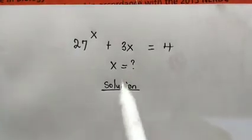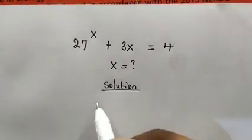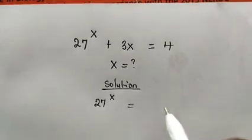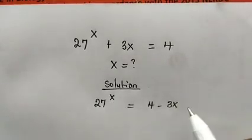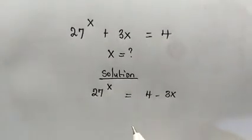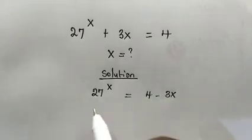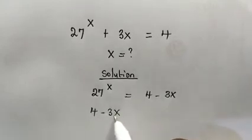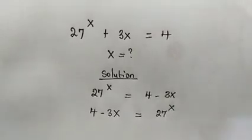From the left hand side, we can subtract 3x from both sides. So we have 27 raised to the power of x will be equal to 4 minus 3x. Now let us change the sides, so this will be 4 minus 3x is equal to 27 raised to the power of x.